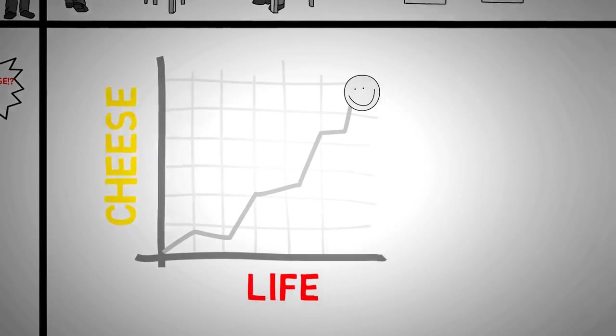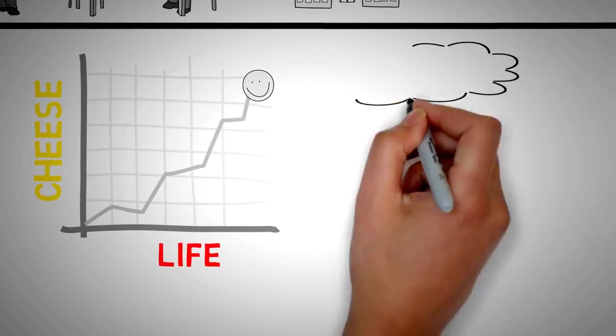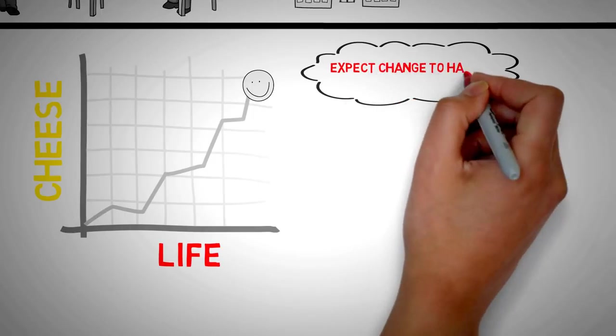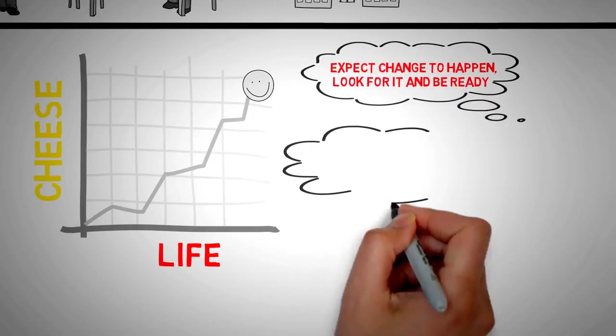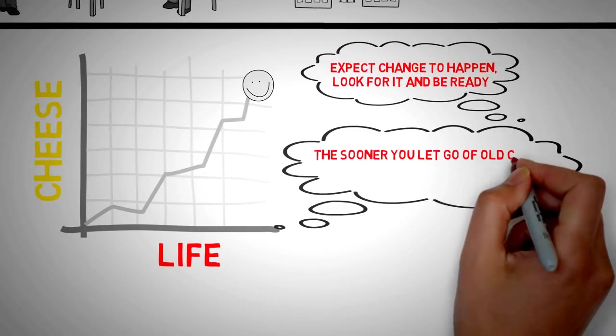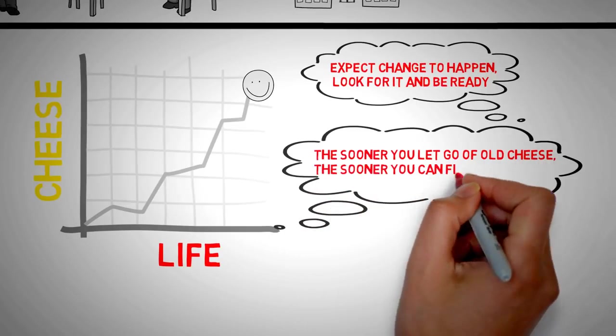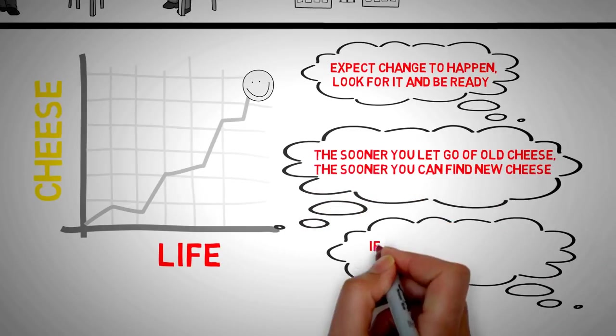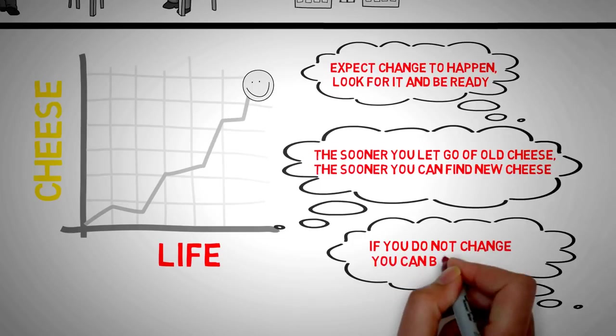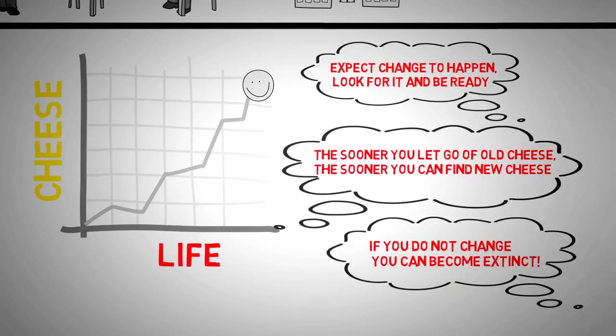Hem and Haw remained bitter and angry about not having their old cheese, complaining how life was unfair to them. They got used to being comfortable and were now afraid to go find new cheese. They got stuck in a habit of doing the same things over and over again and wondering why things didn't get better.